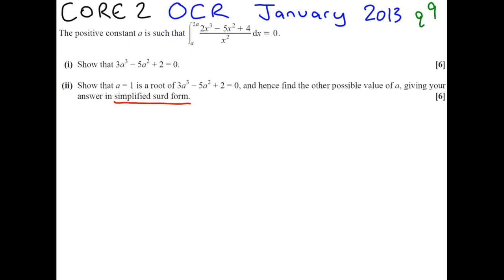Right, so looking at the second part of this question, it says, show that A equals 1 is a root of 3A cubed minus 5A squared plus 2 equals 0. It's a root if we substitute it in and we get 0. So, 3 times 1 cubed minus 5 times 1 squared plus 2 gives us 3 minus 5 plus 2 equals 0, therefore, a root.